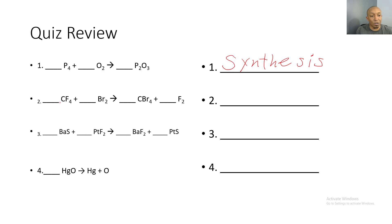Next we have CF plus Br. Notice that C is carbon and F is fluorine — anytime you see capital letters those are two separate elements. Br is bromine because you have a capital B and a lowercase r, which tells you it's one element. CF plus Br yields CBr plus F₂ — fluorine got replaced with bromine in the product section, so one thing got replaced: this is a single replacement reaction.